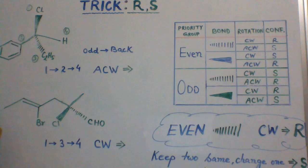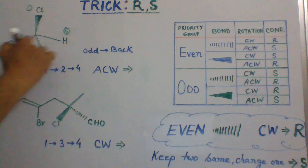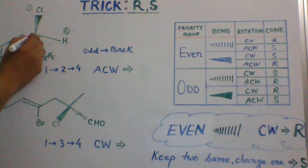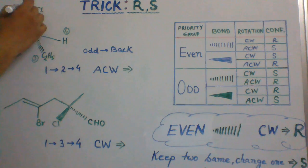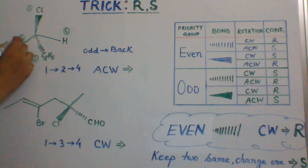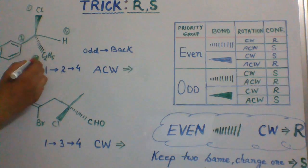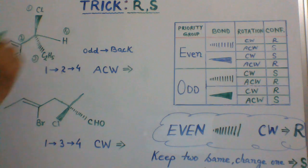First of all, let's prioritize the four different groups attached to this chiral center. Chlorine gets priority number one, phenyl two, ethyl three, hydrogen four.